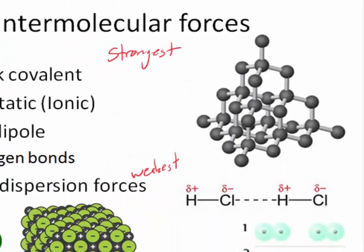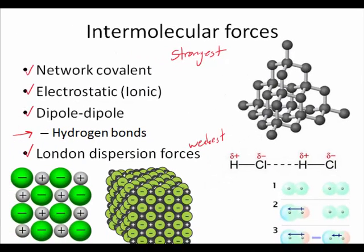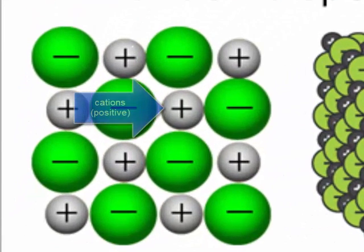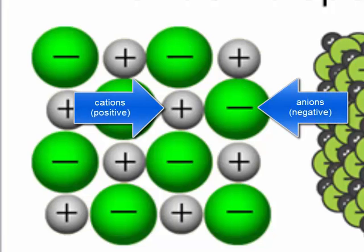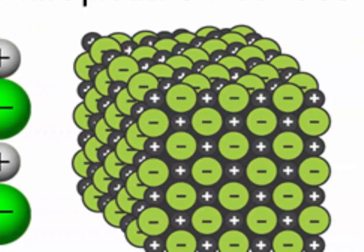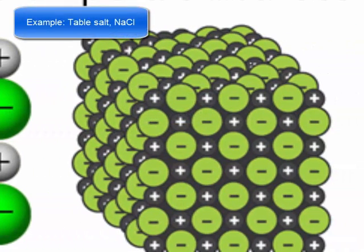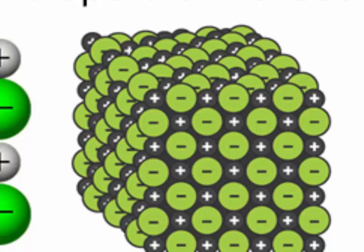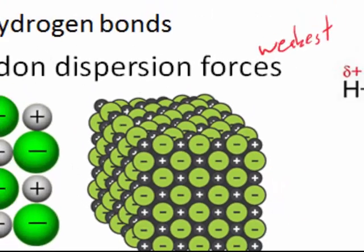The next weakest bond below network covalent is electrostatic or ionic. These are the attractions between ions — cations, positive ions, and negative ions, anions. In three dimensions, it looks like this. This is what sodium chloride, table salt, looks like in three dimensions at the molecular level. Because the attraction between the positive and negative ions is so great, it takes a lot of energy to break them apart, so the melting and boiling points are really high.